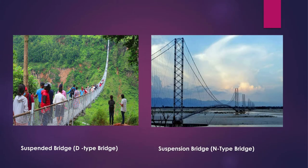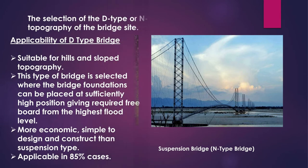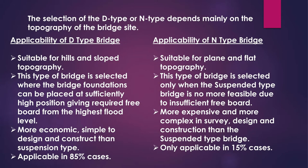Suspended bridges are also known as D-type, whereas suspension bridges are known as N-type bridges. The selection of D-type or N-type depends mainly on the topography of the bridge site. The D-type bridge is selected where the bridge foundations can be placed at a sufficiently high position giving required freeboard from the highest flood level, whereas the N-type bridge is selected only when the suspended type is no longer feasible due to insufficient freeboard.